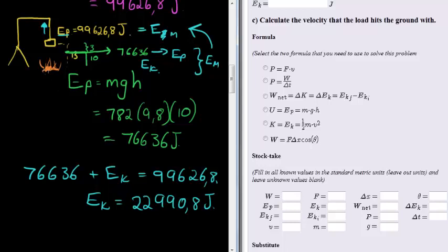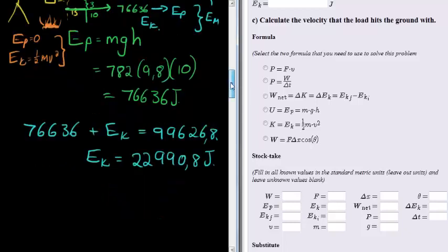the mechanical energy here at the bottom when it hits the ground must be exactly the same. Now when it hits the ground, our potential energy is zero. And our kinetic energy is given by the formula a half mass times velocity squared. And these two values together must give me the mechanical energy I have had from the very beginning when it dropped.